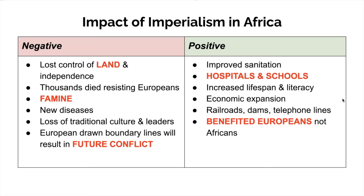When we look at the entire program of imperialism within Africa, there's a lot of things that come about because of this time period — it's very influential in the history of that continent. There are many negatives, but also a few positives. Because the Europeans were industrialized, we see infrastructure programs make their way to Africa: increased sanitation and sewage, creation of hospitals and schools, railroads, dams, and telephone lines all come into the colonies.